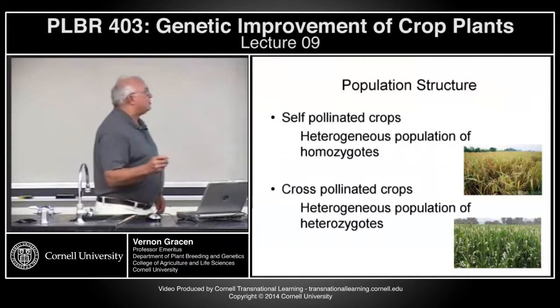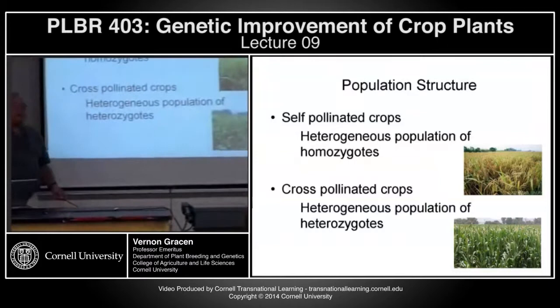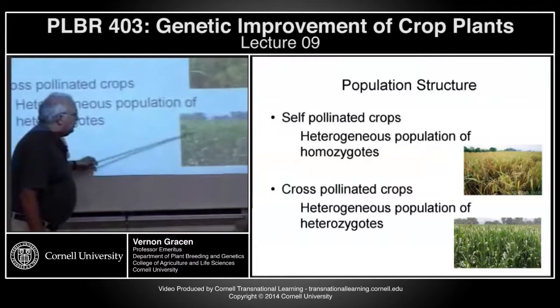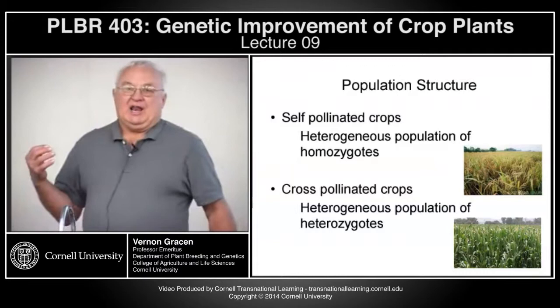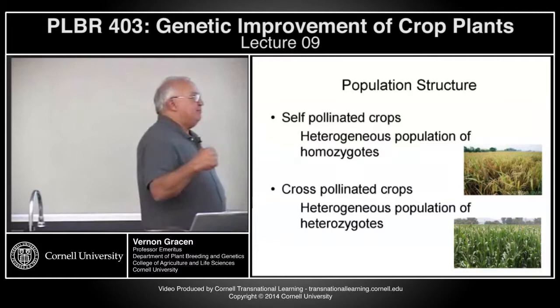Just to give you a view of the population structure: self-pollinated crops have a heterogeneous population of homozygotes — you can see lots of variability in the different plants, and you just have to take my word that they're self-pollinated and therefore homozygous. Whereas cross-pollinated crops have a heterogeneous population of heterozygotes — a field of maize showing extensive variation. Visually, all you can tell is these are heterogeneous populations and not any form of pure line variety.